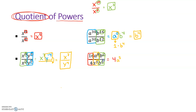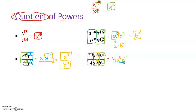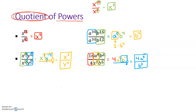We have one more to take care of: b to the second divided by b to the fifth. Two minus five gives us b to the negative third. I'm not happy with that answer — I have to fix it. Drawing my fraction bar underneath, the only thing I really need to fix is that b to the negative third. I don't like negative exponents, so since it's sitting in the numerator, we drop it down to the denominator and turn it into a positive three. Everything else — a to the fifth — stays right up top. There's your final answer.